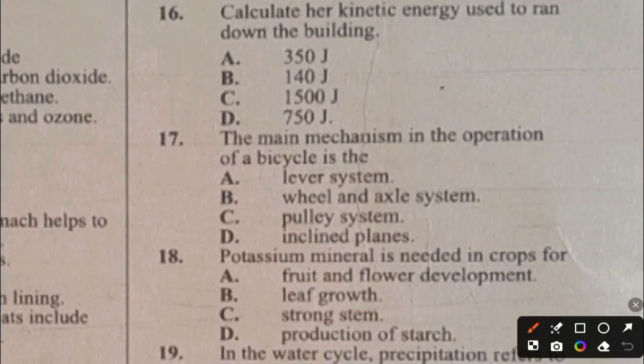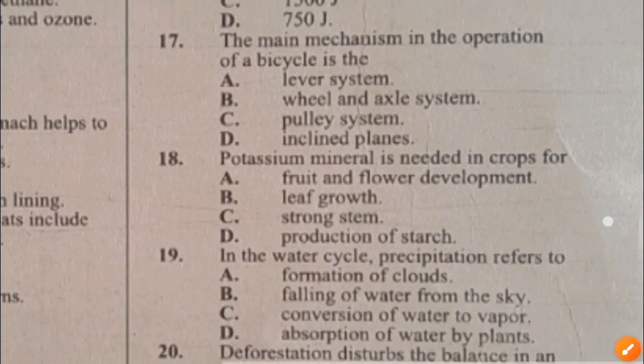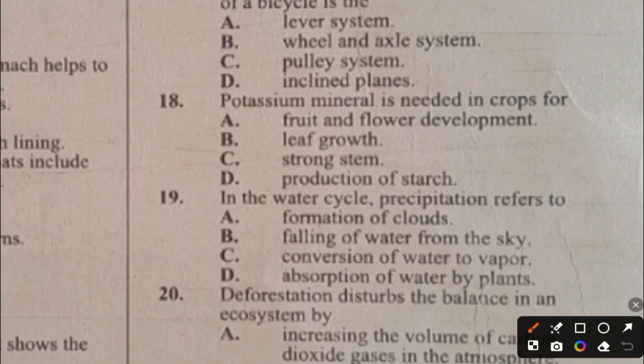Question 18. Potassium mineral is needed in crops for: A. Fruit and flower development, B. Leaf growth, C. Strong stem, D. Production of starch. The answer to question 18 is A, fruit and flower development. Question 19. In the water cycle, precipitation refers to: A. Formation of clouds, B. Falling of water from the sky, C. Conversion of water to vapor, D. Absorption of water by plants. The answer to question 19 is B, falling of water from the sky.